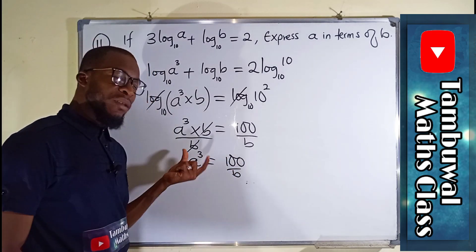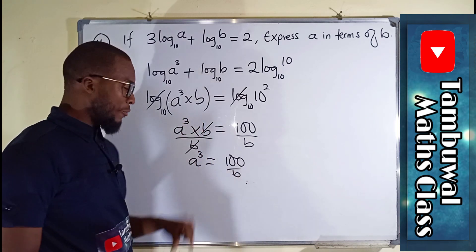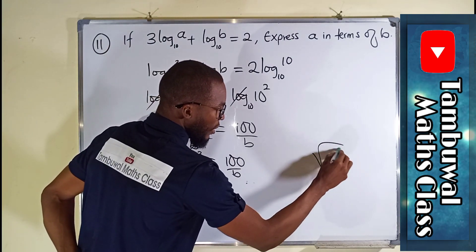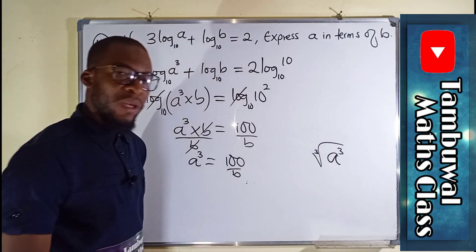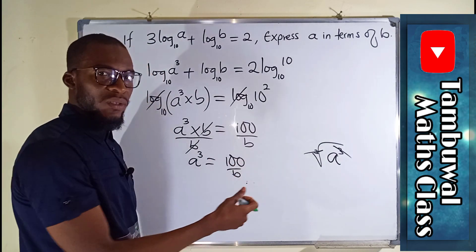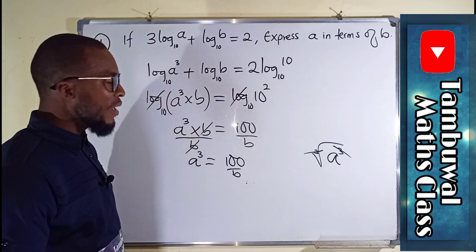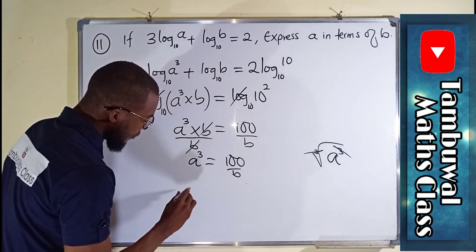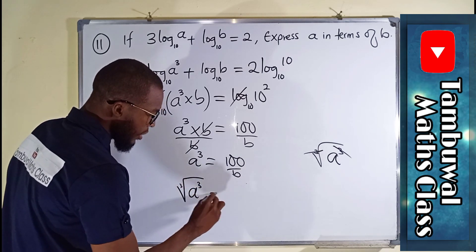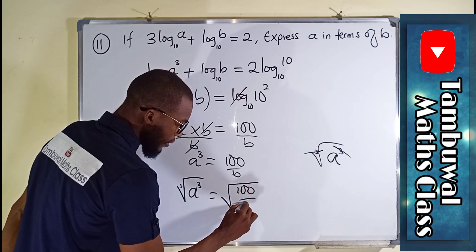Still, this is A³, but we are only interested in knowing only A. So by taking cube root, if you assign cube root to A³, that cube root will cancel the power. So we can take the cube root of both sides because whenever you have an equation, whatever you do to the left-hand side, you have to do it to the right-hand side to make the equation balance. So we have cube root of A³, the same thing as cube root of 100 over B.